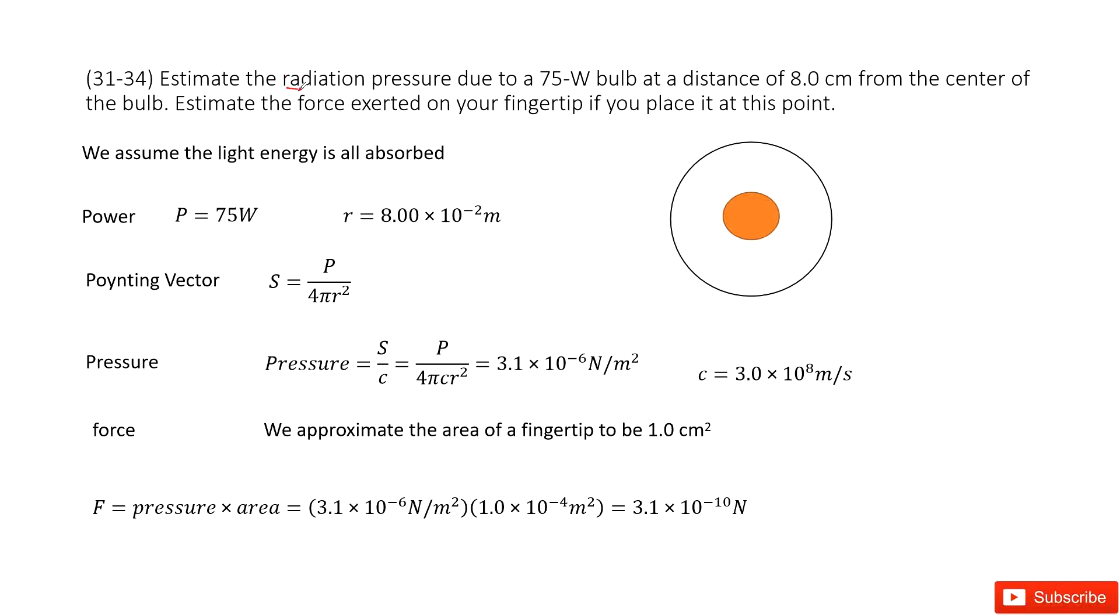So first we need to find the radiation pressure due to a light bulb. And the given quantity is about the power for light bulb and the distance from the center to the bulb.